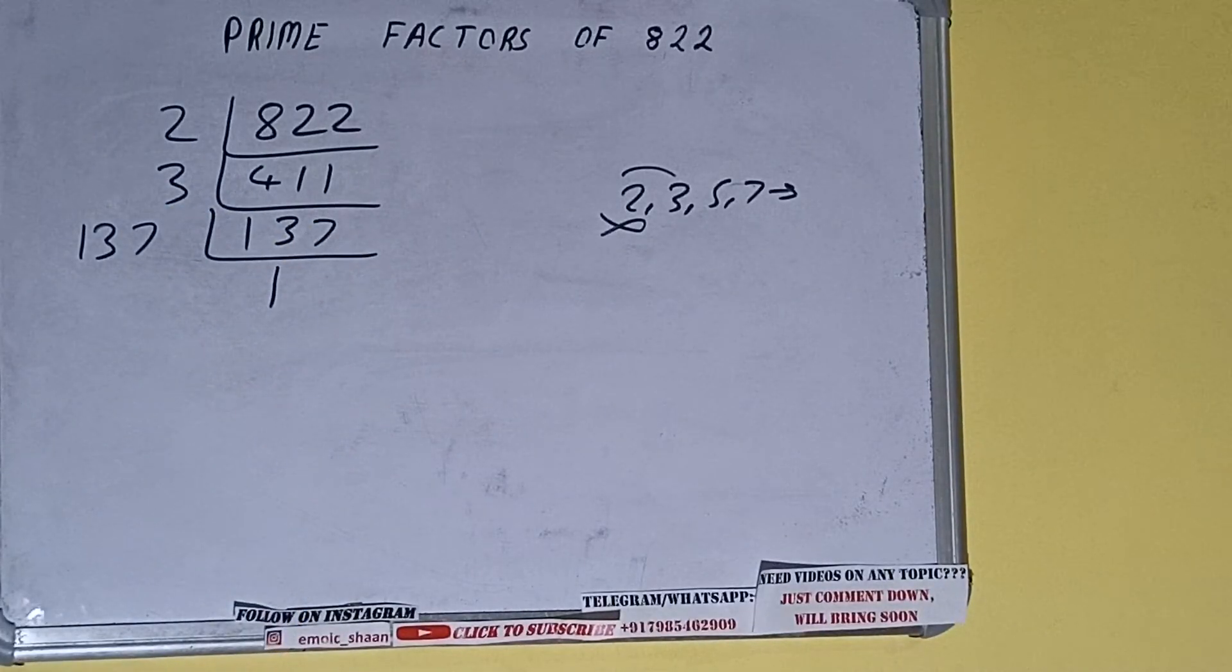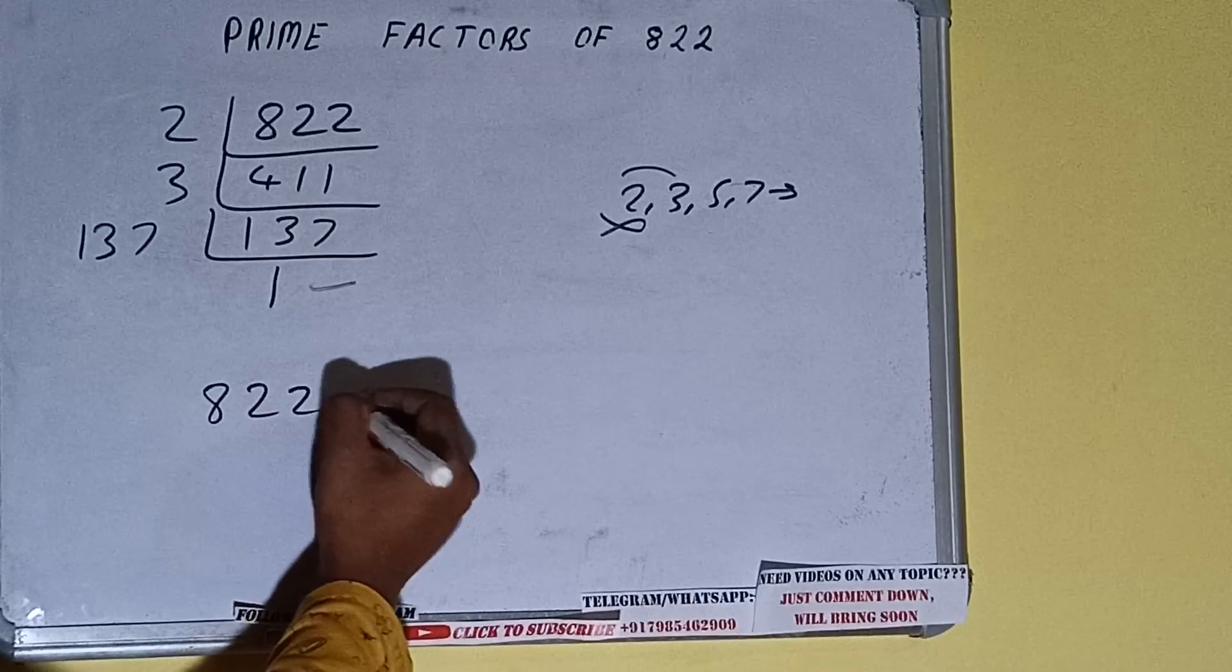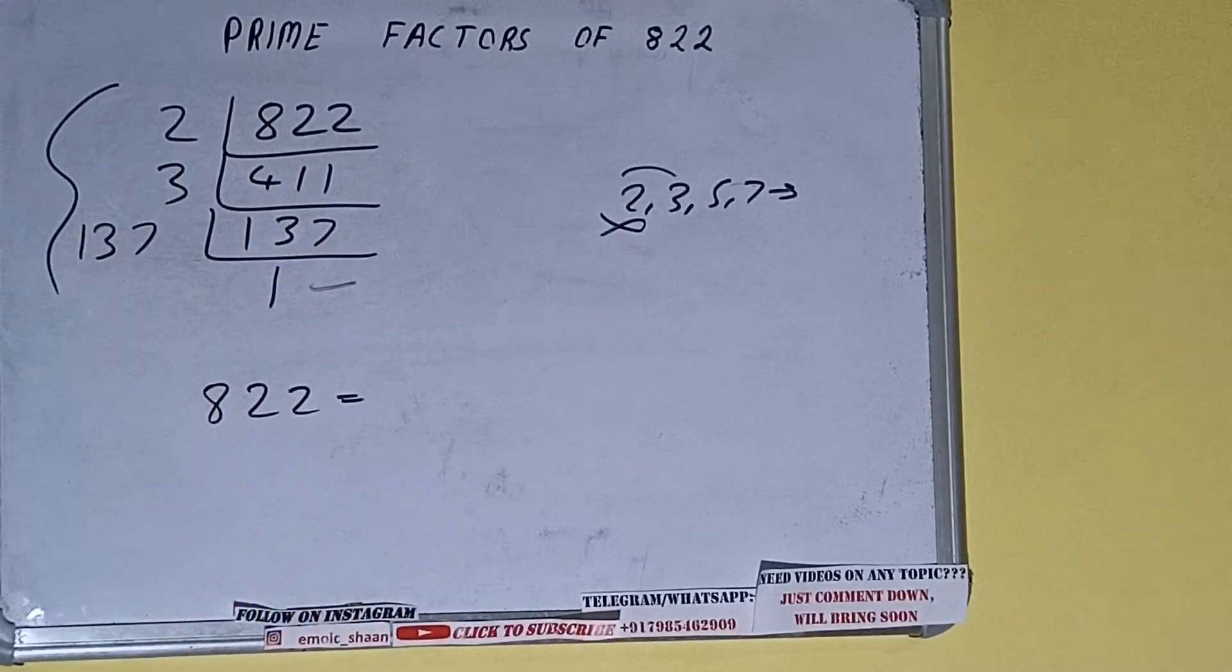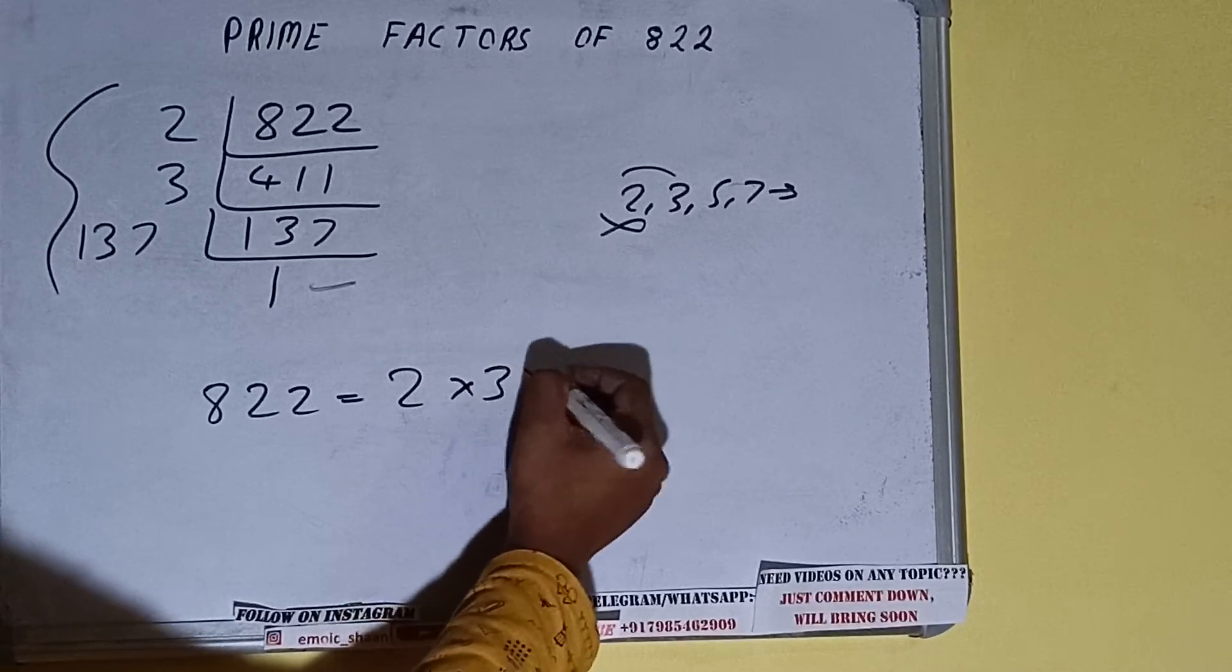Once we get 1, we need to stop and do one last thing. That is, prime factors of 822 equals multiply whatever we have on the left-hand side. That is 2 × 3 × 137.